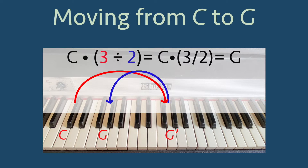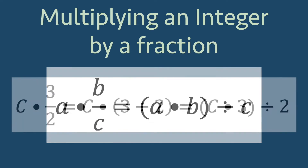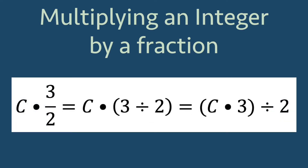What this also shows us is how to multiply an integer by a fraction in general. C is the name of a note, but it does stand for a note number or a frequency. Using the steps we had before, we can discover that multiplying an integer by a fraction amounts to multiplying the integer by the numerator and then dividing by the denominator. So C times three halves is the same thing as C times (three divided by two), which we can rewrite as (C times three) divided by two. We must note we're allowed to do this only because the multiplication is first.